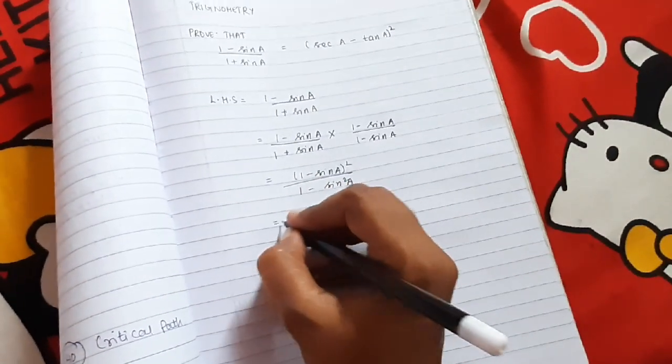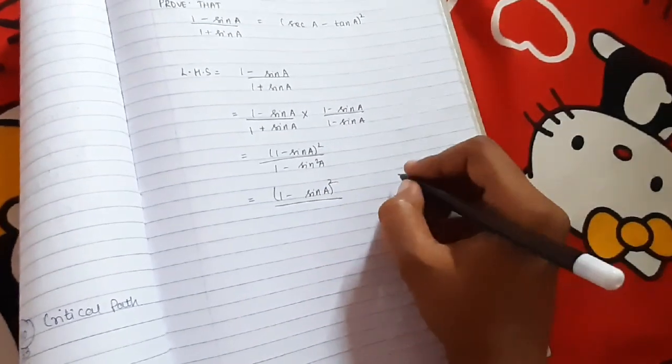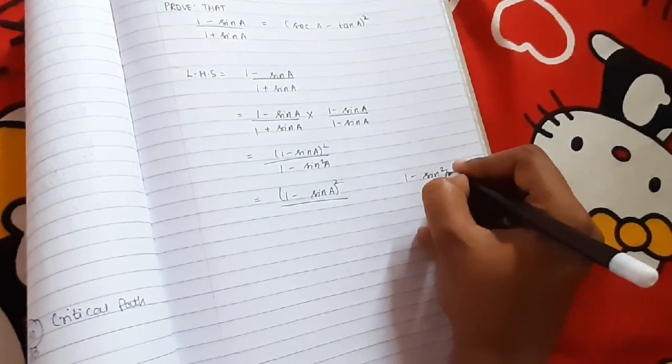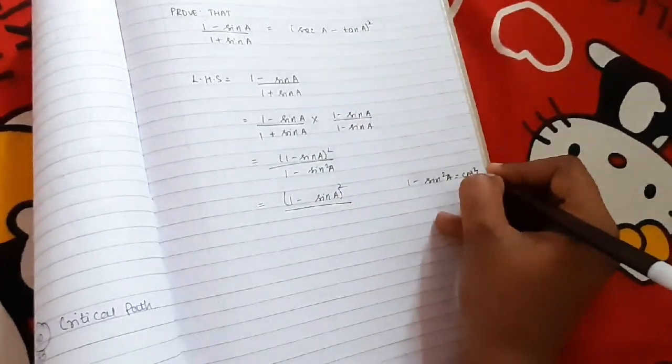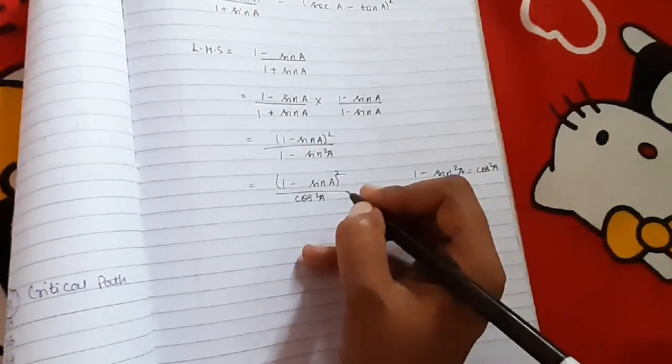Now as we know, 1 - sin² A is nothing but cos² A. So now we will write it cos² A.